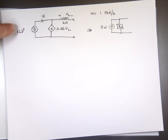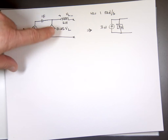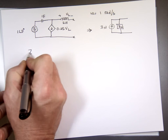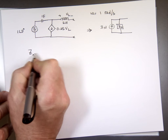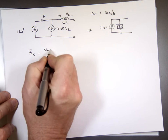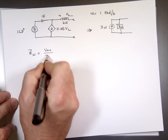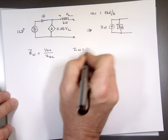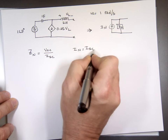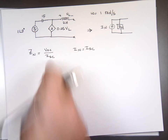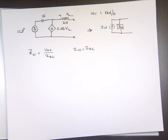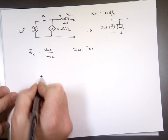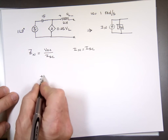Since you have both dependent and independent sources, to find Z_Norton — which is really the same as Z_Thevenin — it is V_open_circuit over I_short_circuit. And I_Norton is I_short_circuit. Since I_short_circuit appears in both, let's find that first. Put a wire right here and see what that current is — that's I_short_circuit.